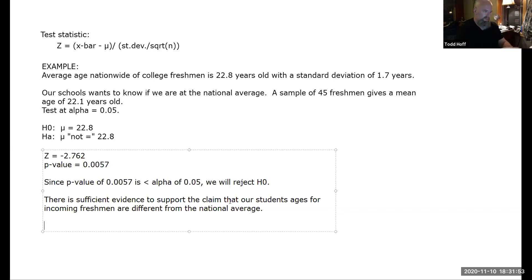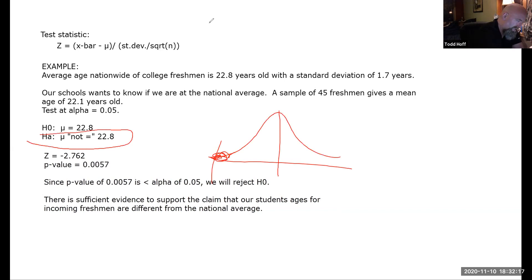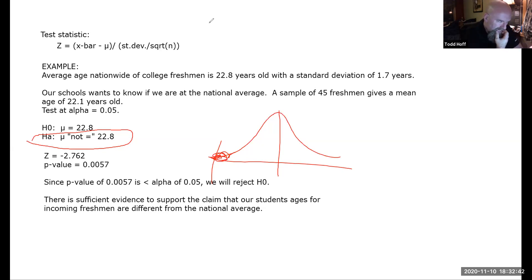Notice: even though the result was way down on the left tail at -2.762, we can't say the evidence supports that our students are younger — because our alternative hypothesis was only that they were not equal to 22.8. We can only say they're different from the national average, not that they're younger or older. We either reject the null or fail to reject it; if we reject, we support the alternative exactly as it was worded.